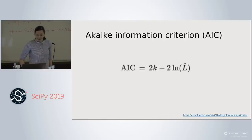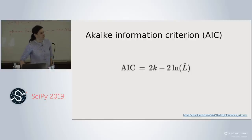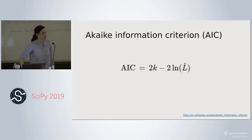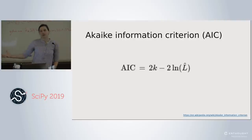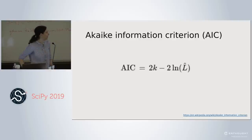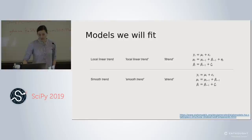How do these models get evaluated? Usually with the Akaike Information Criterion, your AIC: two times your number of parameters minus two times your log likelihood. You want it to be more negative when comparing models. This is just one way to evaluate state space models.